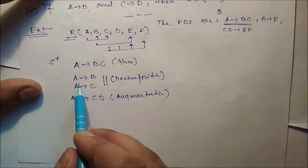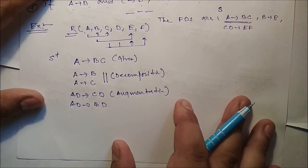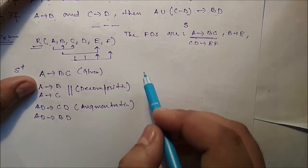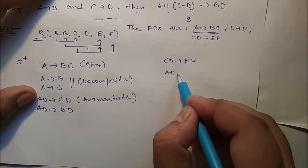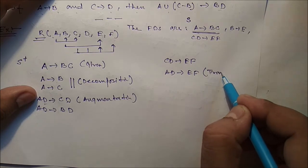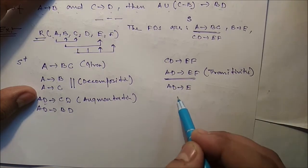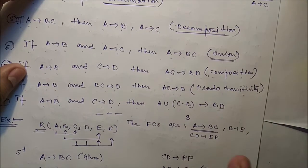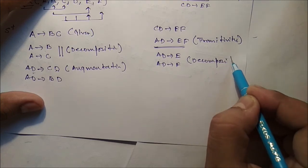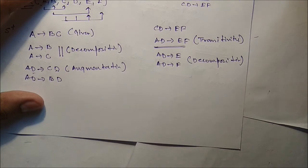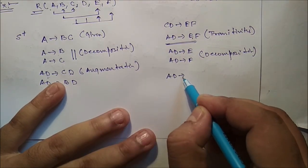We have CD→EF and we derived AD→CD. By transitivity: AD→EF. From AD→EF, by decomposition: AD→E and AD→F. Also, combining AD→CD and AD→EF gives AD→CDEF.